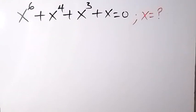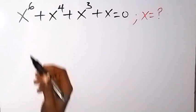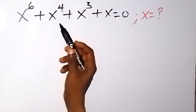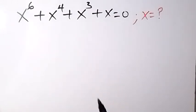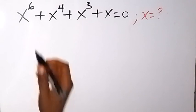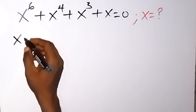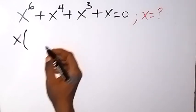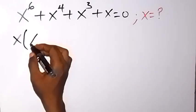You are welcome to this class, and thank you for joining us. We want to find the value of x in this equation: x raised to power 6, plus x raised to power 4, plus x raised to power 3, plus x equals 0. From here, let's factor x out as it is common.